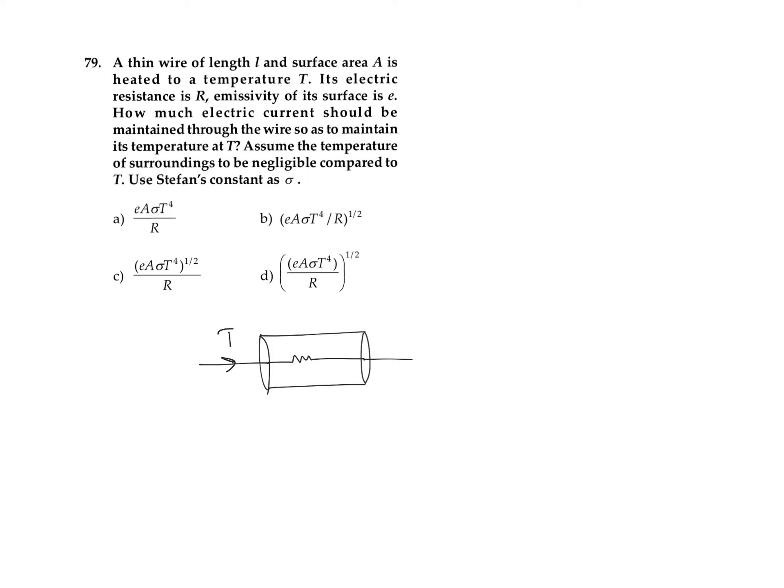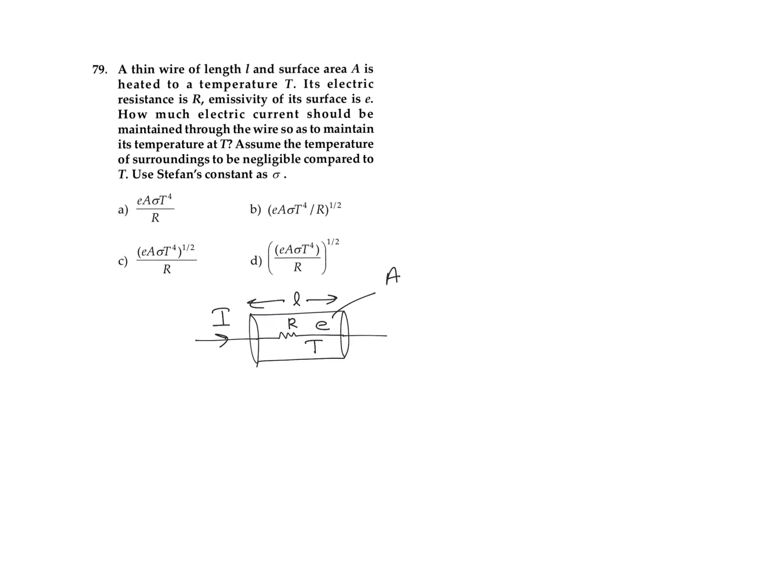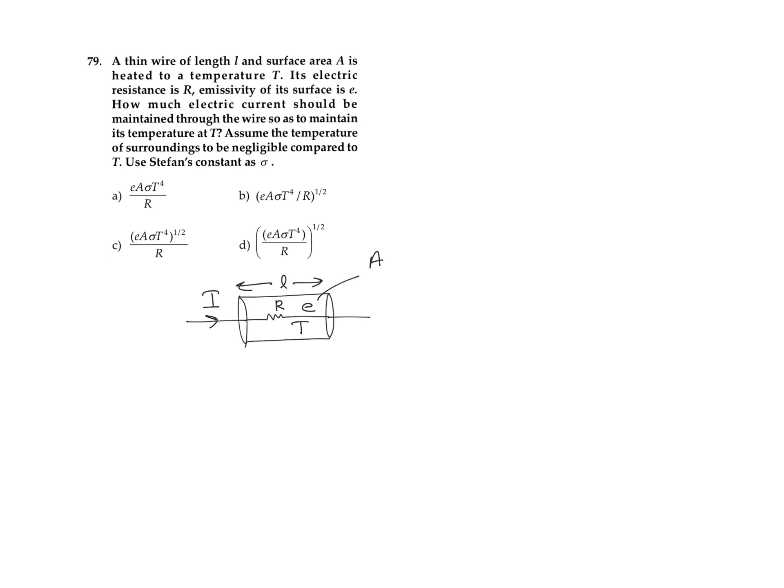So current I is passing through it, resistance is R. In the question it is given that thin wire of length L and surface area A is heated to temperature T. Its temperature is T, electrical resistance is R, emissivity of surface is E. How much electrical current should be maintained through the wire to maintain temperature T?